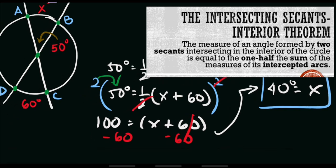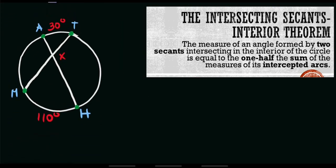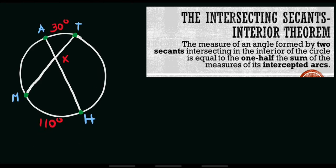For our last example, we have interior angle x, with arc BO equal to 30 degrees and arc MH equal to 110 degrees. The intercepted arcs of angle x are different arcs, so we first solve for a related angle. Let's name that angle as angle y, and apply the vertical angles concept to find x.